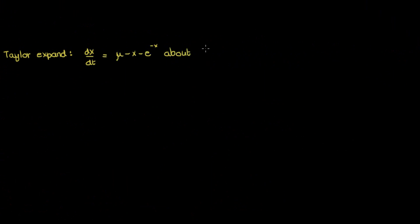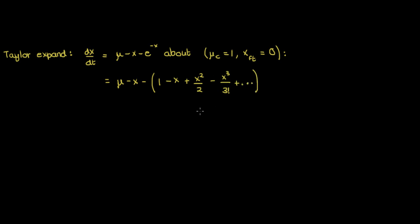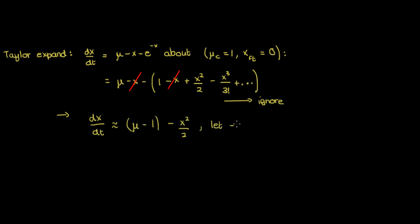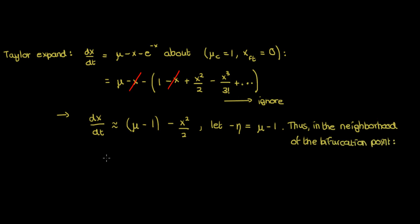Going back to dx/dt = μ − x − e^(−x), which has a saddle-node bifurcation at μ_c = 1 and x_ft = 0, we perform a two-variable Taylor expansion around this bifurcation point. Since μ and x appear in first power and the exponential has no μ, we only need to Taylor-expand e^(−x) about 0: the Maclaurin series gives 1 − x + x²/2 − x³/3! + ⋯. The x terms cancel, and ignoring powers ≥ 3, we obtain the Taylor-expanded differential equation.